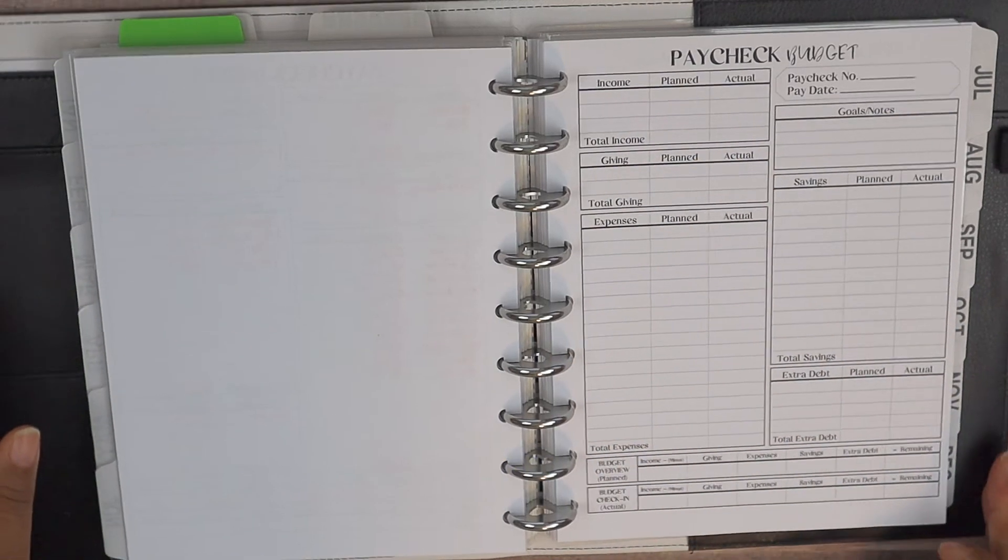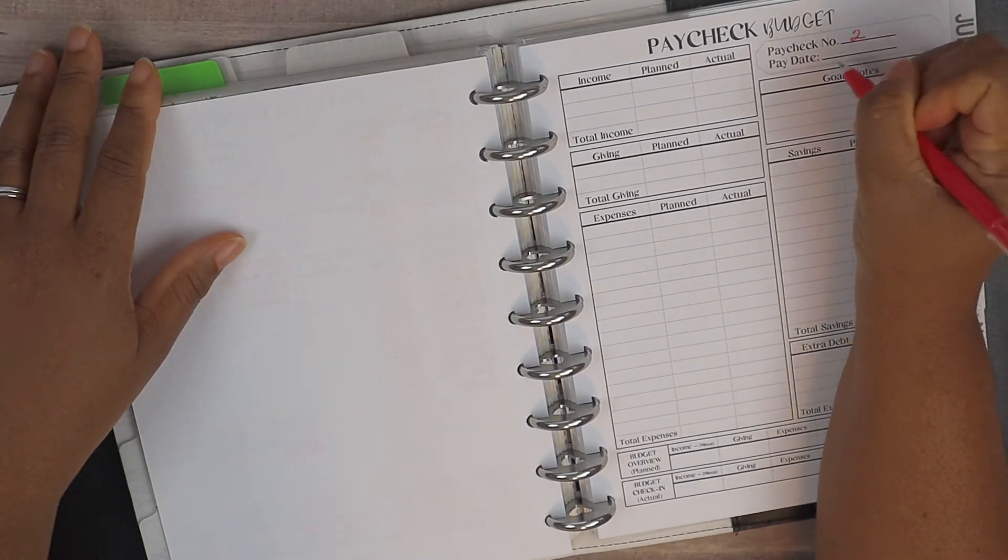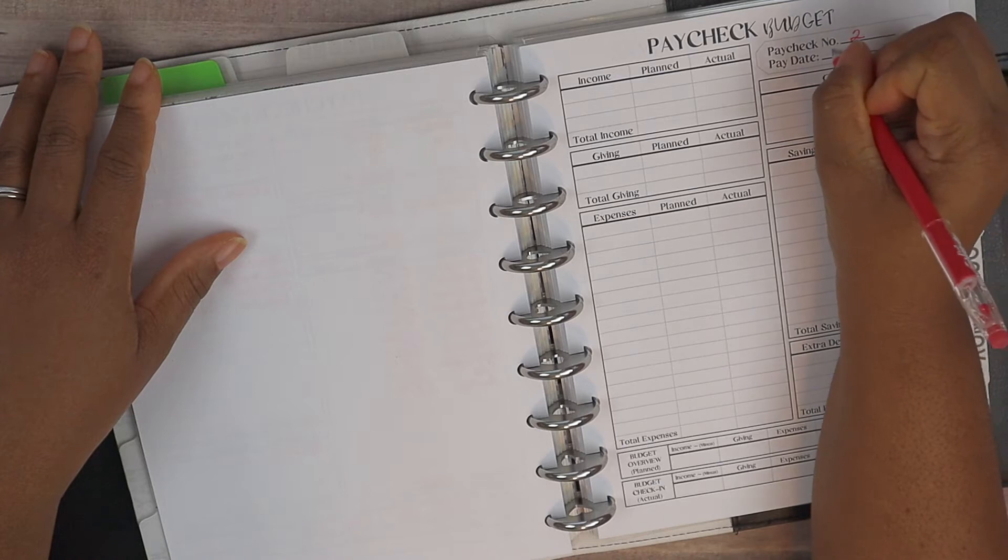Alright, so let's go ahead and get right into this video. We are looking at paycheck number two, and paycheck number two is from June the 19th through June the 30th.